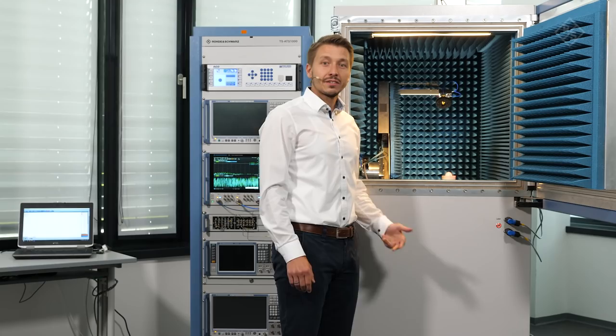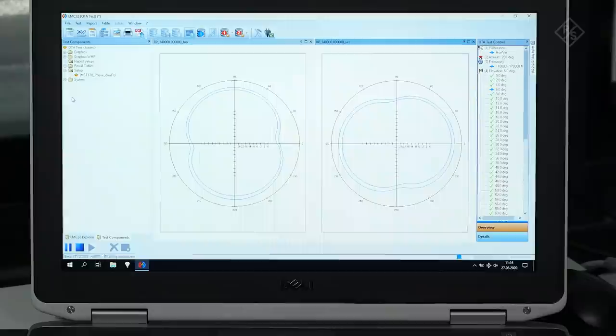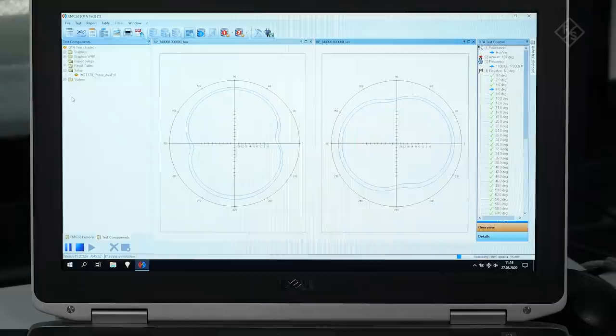The fully automated antenna measurement is performed by our software AMS32. The software allows performing the measurement as well as all post-processing required once the measurement is finished. After roughly 40 minutes, the measurement is complete and the data is obtained. Let's now look at the final measurement results.